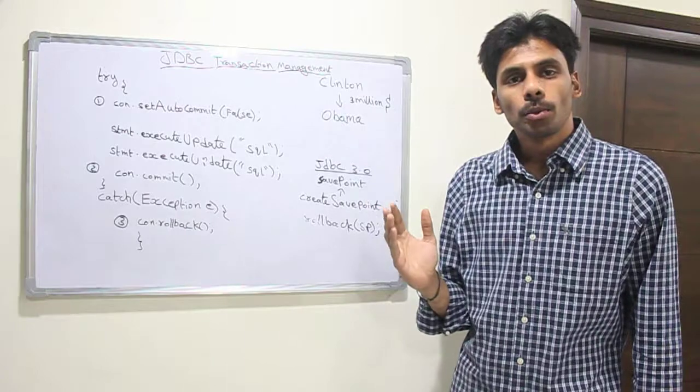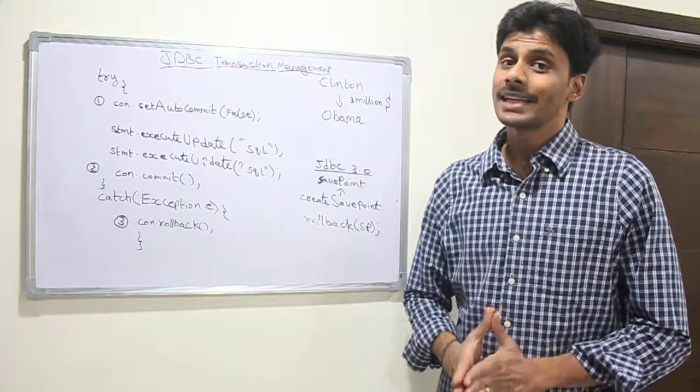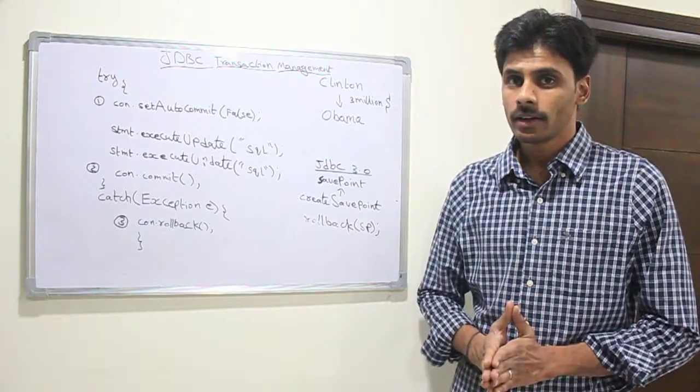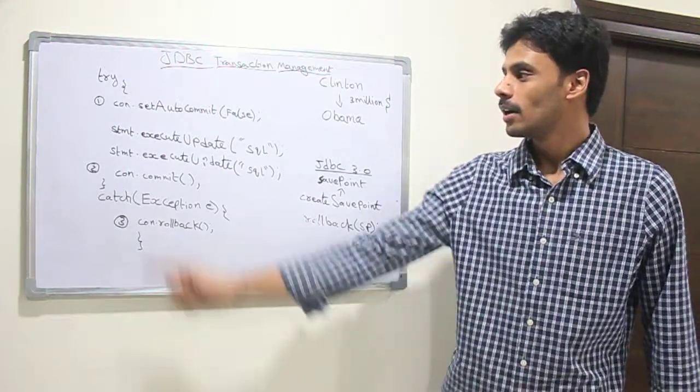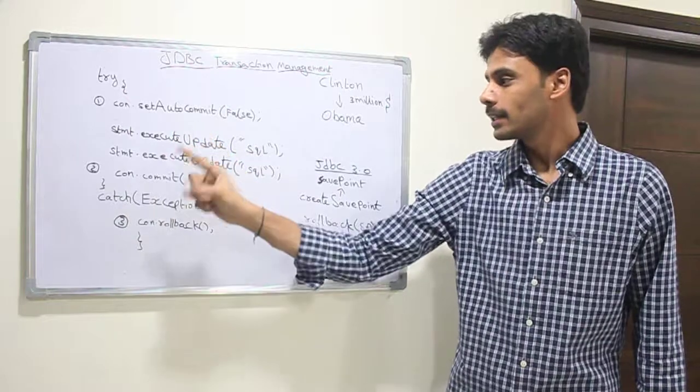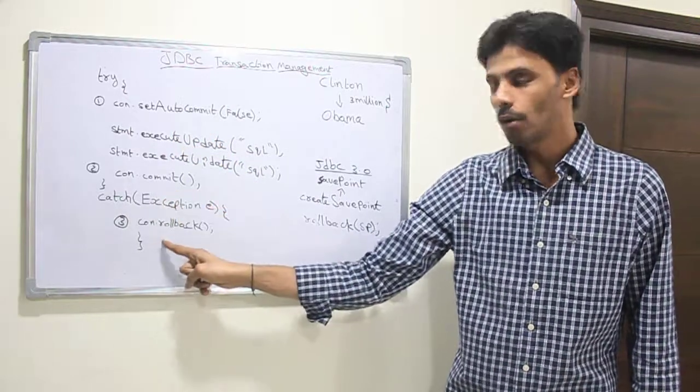That's where transaction management comes into picture. JDBC gives a simple transaction management API, out of which the connection interface has three key methods. First method is setAutoCommit, second method is commit, then we have rollback.